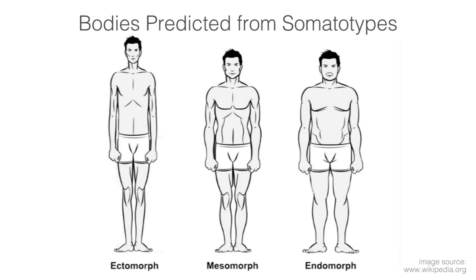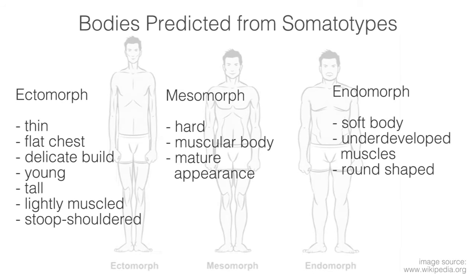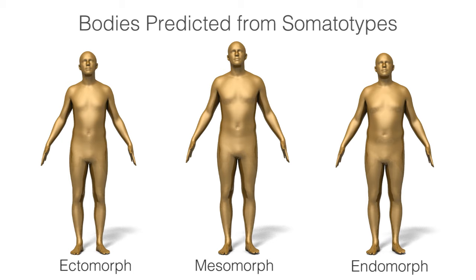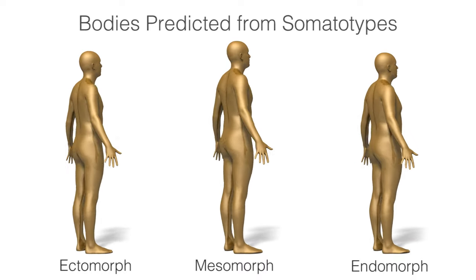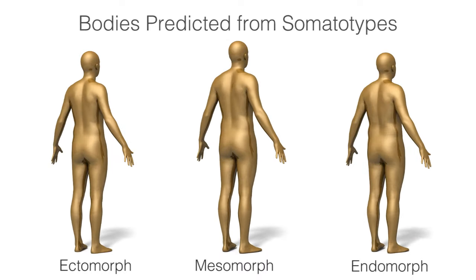Sheldon popularised the notion of a somatotype in the 1940s, using the terms ectomorph, mesomorph, and endomorph to describe human body types. We collected a standard set of words associated with these types and collected ratings of our training bodies for these new words. Conditioning on the words used for each body type, we reconstruct prototypical bodies corresponding to the classical descriptions. We believe this is the first statistical analysis to produce 3D body shapes of this type.